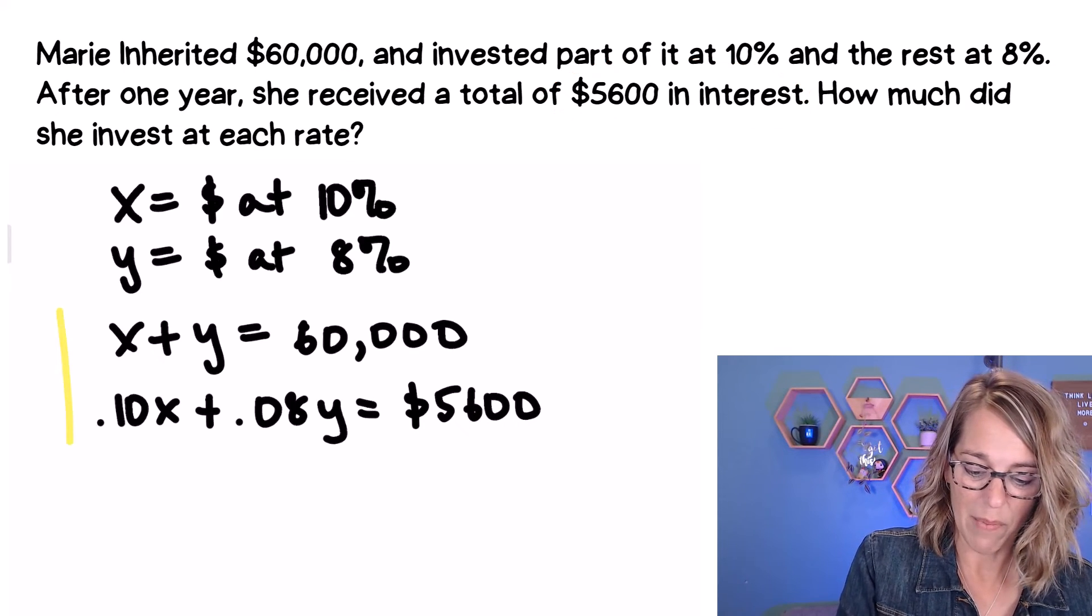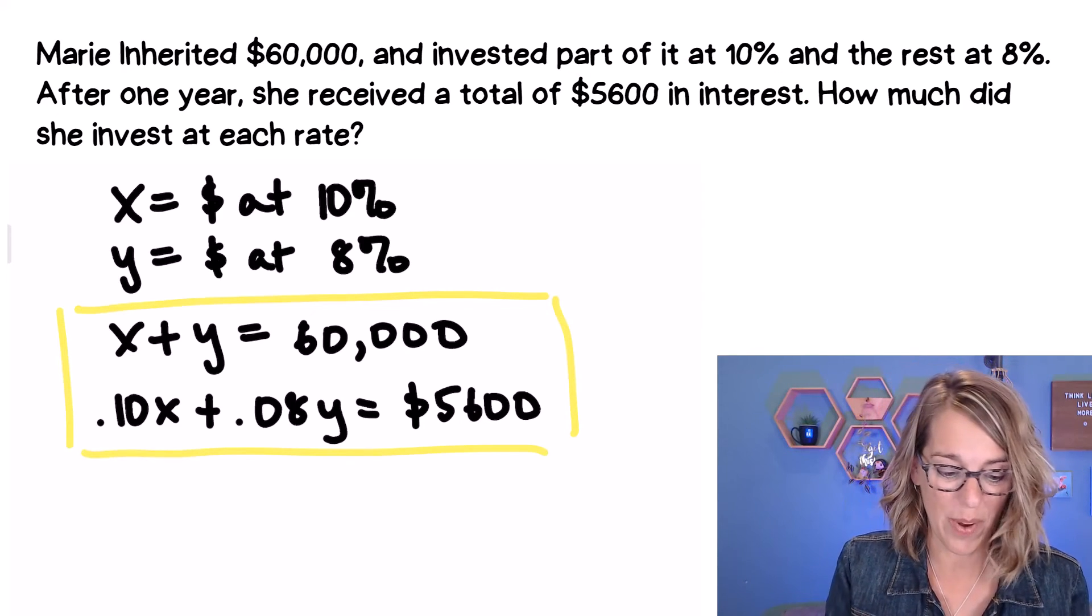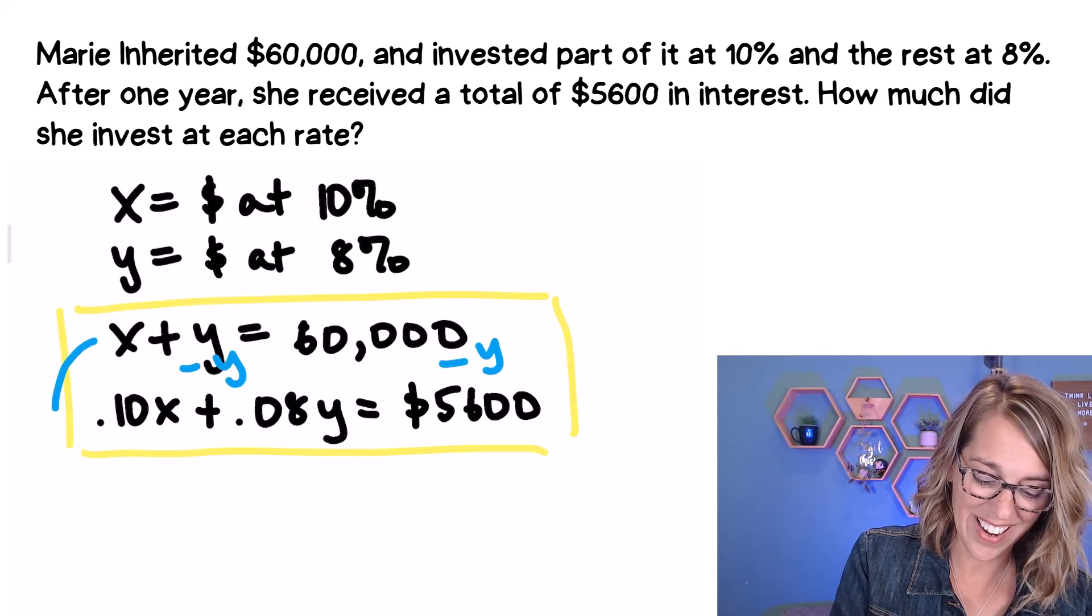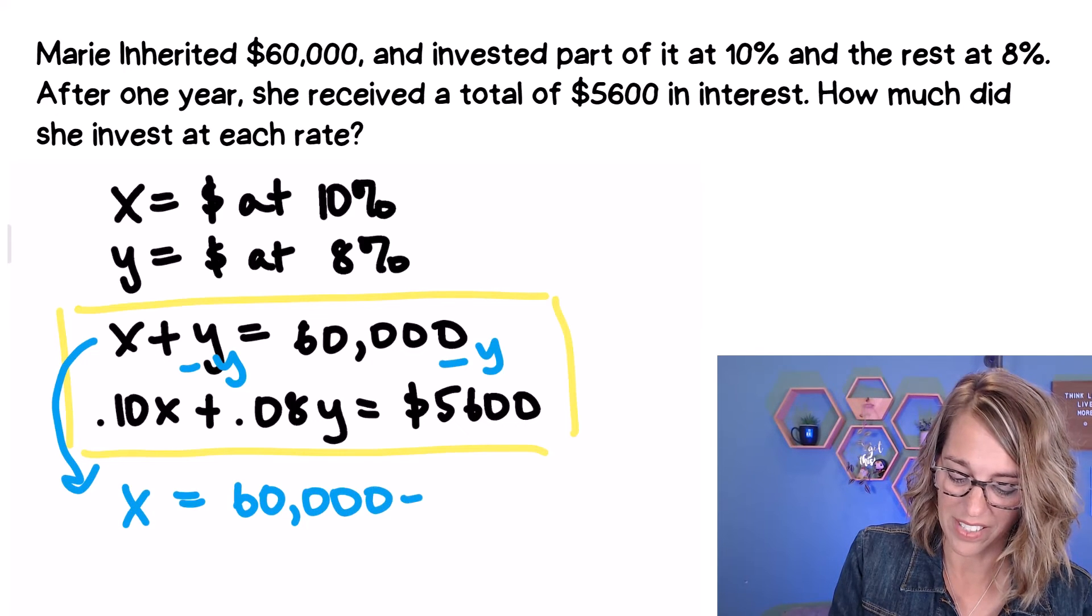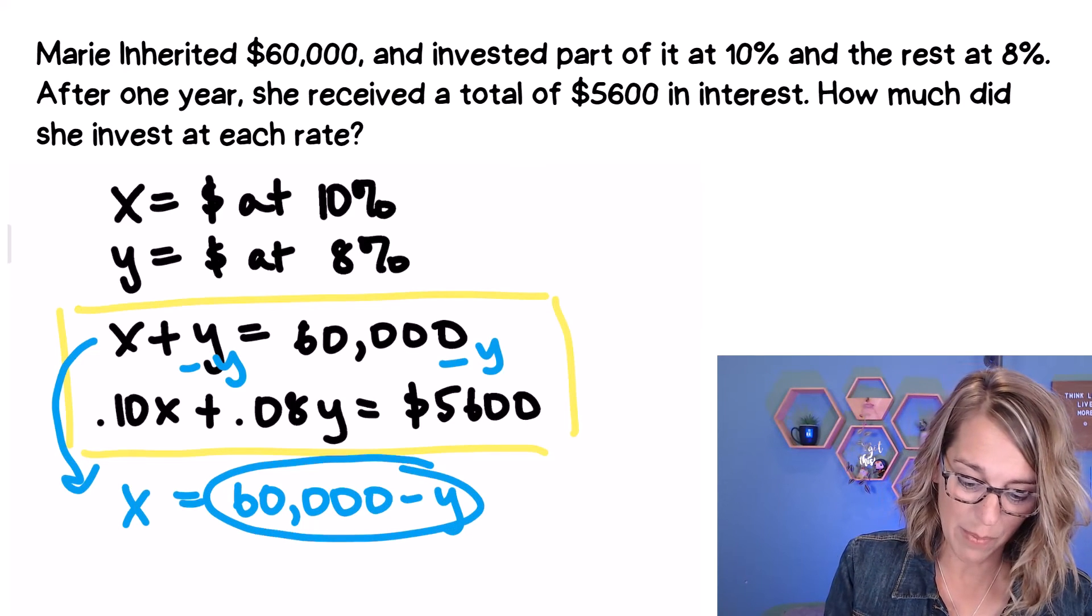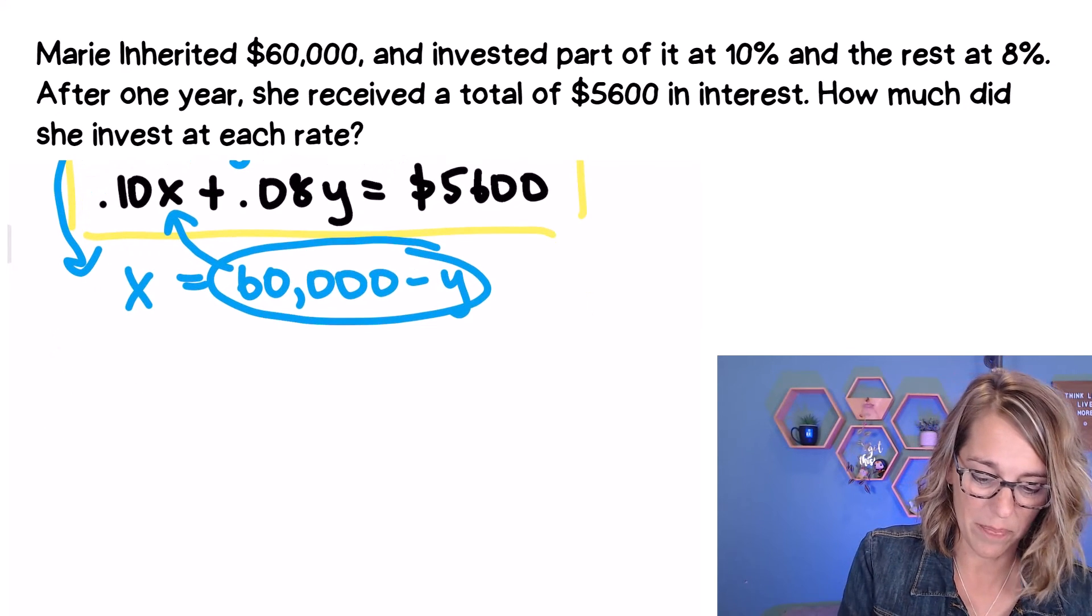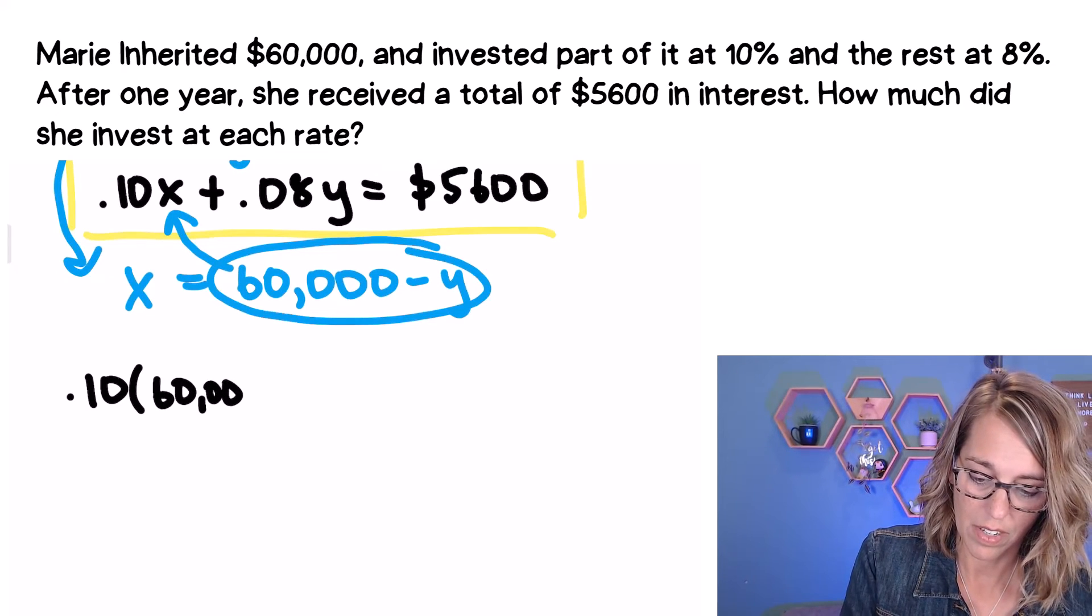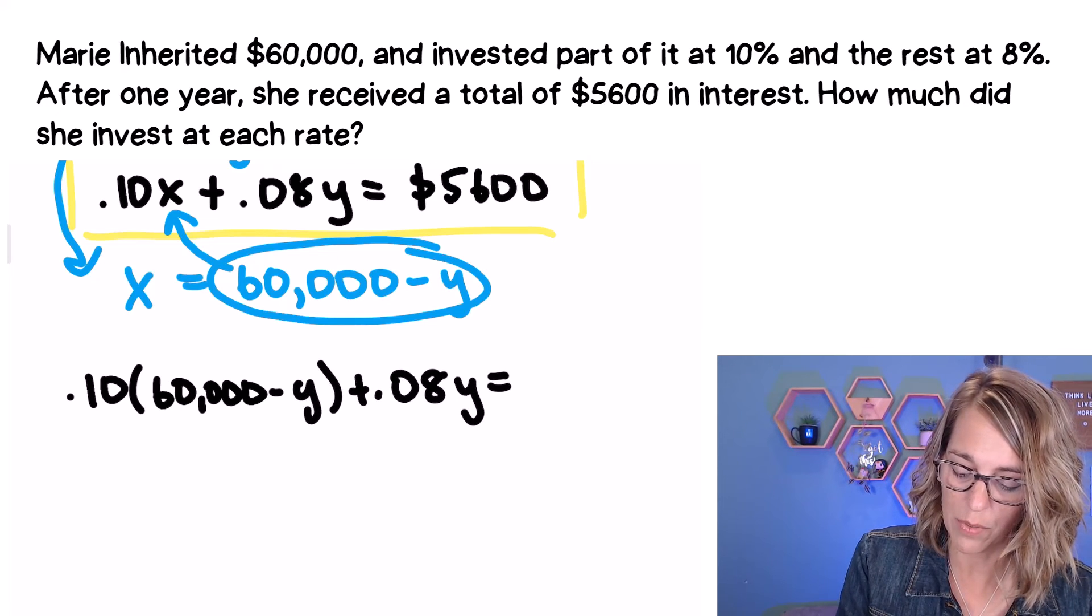But here we are, I've got my system of equations, I definitely want to use substitution, starting with that simplest equation. I'm going to take that simplest equation, subtract a Y from both sides, making my life a little easier there. And I get X is equal to 60,000 minus Y. Now I can go ahead and put this value that represents X into my other equation where X lives.